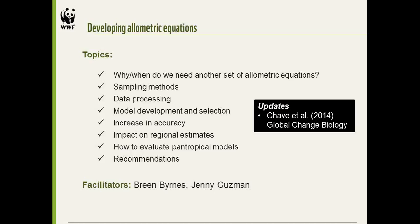In that whole process I've made it a little bit less of a practical guide, but hopefully more overall useful. What I was asked to do is look at these questions: why do we need another set of allometric equations — I've changed that to when do we need a new set — and then I get into the details of sampling methods, data processing, model development and selection, and I use my example to show the increase in accuracy and impact on regional estimates, with more general discussions about how to evaluate pantropical models.